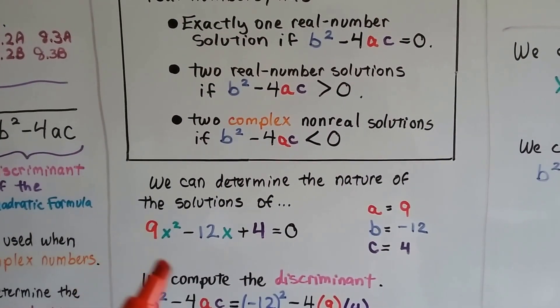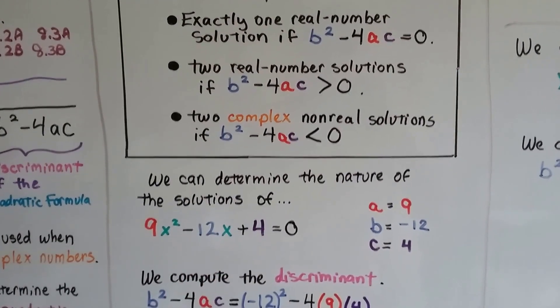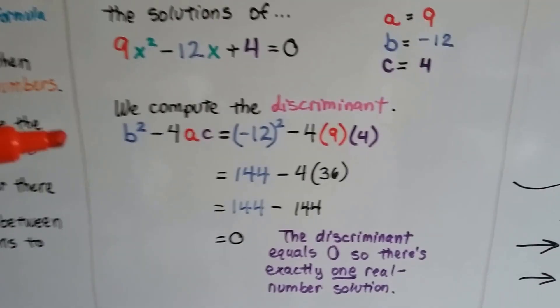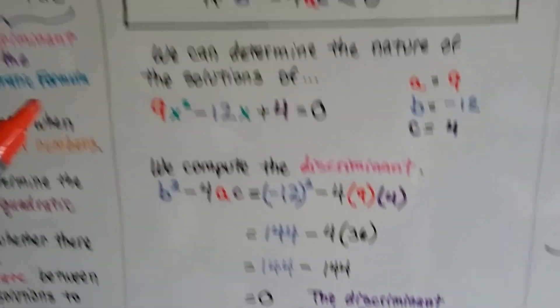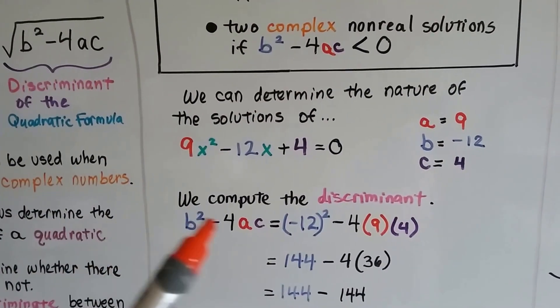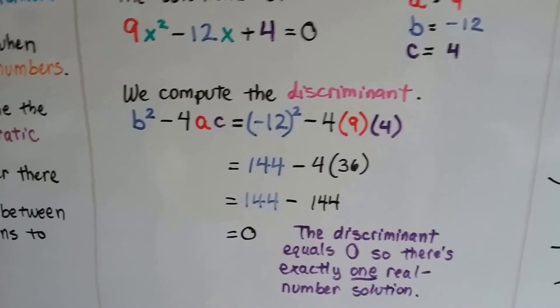And we can determine the nature of the solutions of this quadratic equation in standard form. We have a 9 here for a, we have a negative 12 here for b, and a 4 for c. And we're going to substitute those into this discriminant. So here's our discriminant, b squared minus 4ac. That's what's under the radical sign. You notice we don't have the radical sign around it. We just have the b squared minus 4ac.